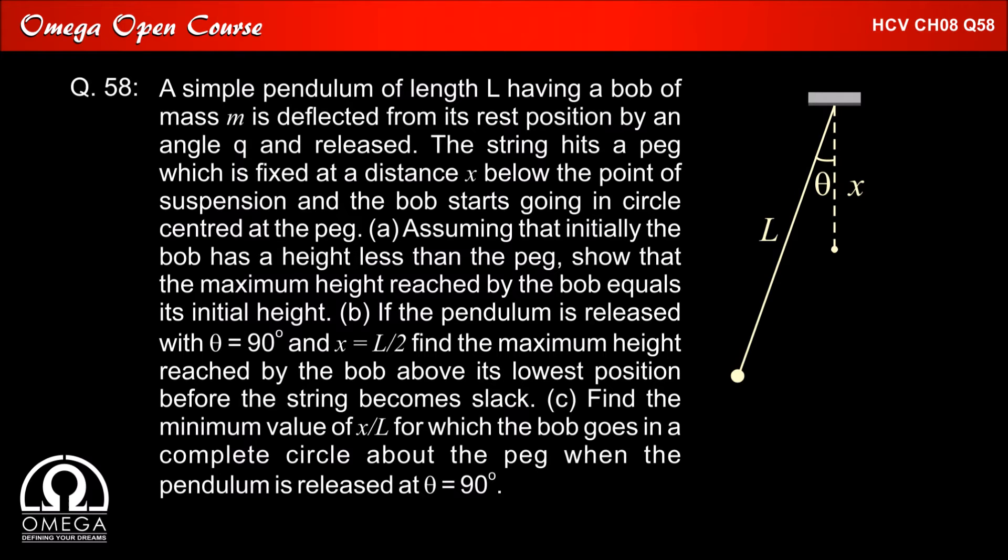Part A: Assume that initially the bob has a height less than the peg so that the maximum height reached by the bob equals its initial height. Part B: If the pendulum is released with theta equal to 90 degrees and x equal to L by 2, find the maximum height reached by the bob above its lowest position before the string becomes slack.